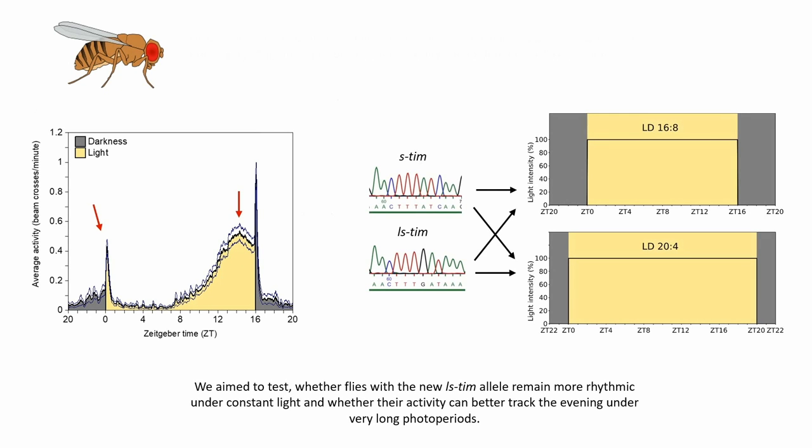We aim to test whether flies with the l-s-tim allele remain more rhythmic under constant light and whether their activity can better track the evening under very long photoperiods.